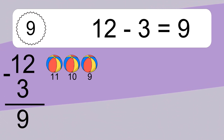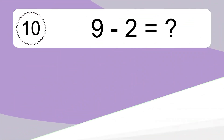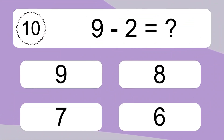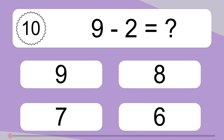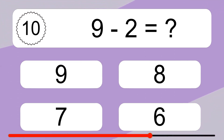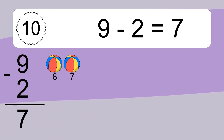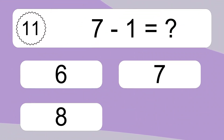12 minus 3 equals what? 12 minus 3 equals 9. Let's count it: 11, 10, 9. 9 minus 2 equals what? 9 minus 2 equals 7. Let's count it: 8, 7.